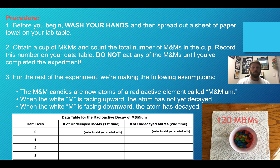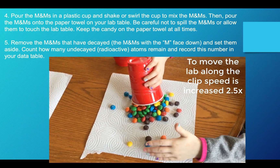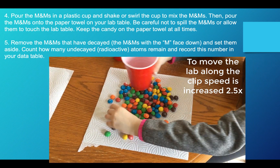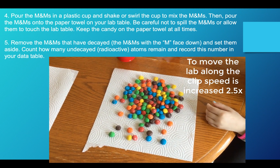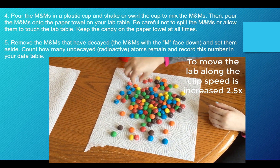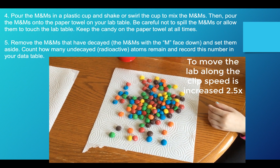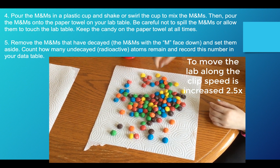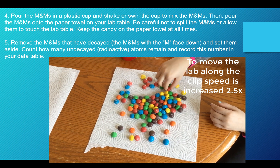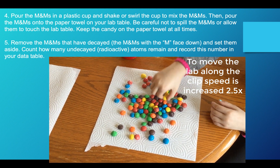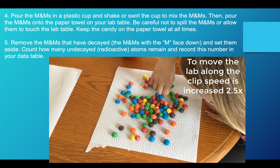We are starting with 120 M&Ms in our cup, and we're going to do that for both trials. If you're following along with the lab, you should enter 120 for our initial count of undecayed M&Ms. Now we're going to pour the M&Ms out of the cup, lay them flat, and then remove any M&Ms that have decayed — in other words, remove the candies that have the M face down and put them off to the side. After that, we're going to count the remaining M&Ms and record that number in our data table.